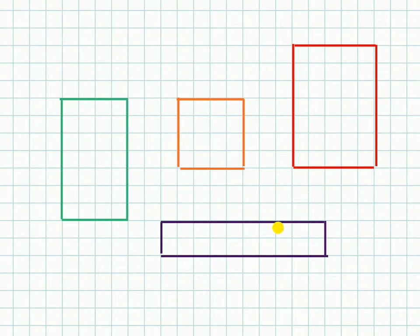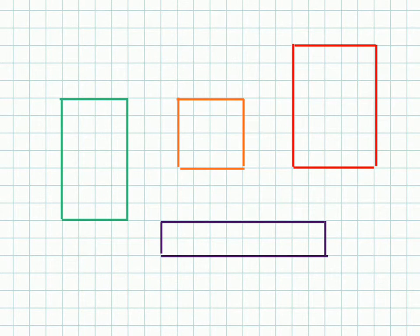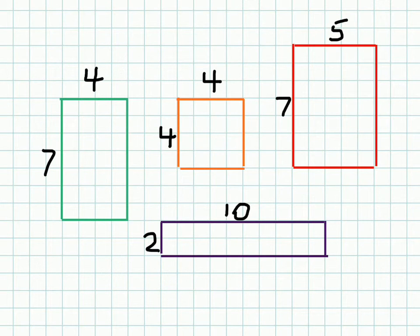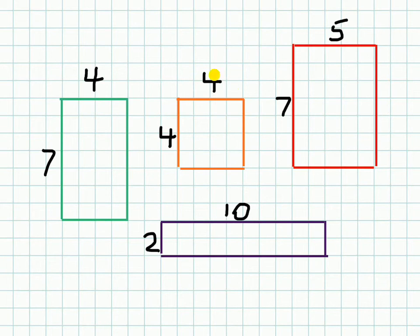So here we have a bunch of different rectangles. Look at these rectangles and see if you can use the shortcut. I'll give you some hints — the numbers — so you don't have to count. There's the length of each side, and this should help you figure out the area of all these. And by the way, squares are also rectangles, so it works for squares too.